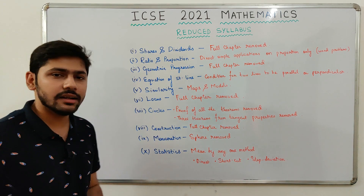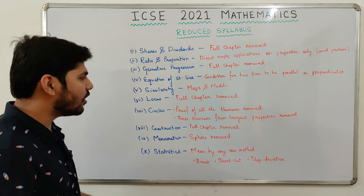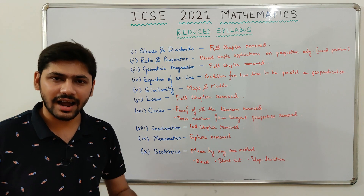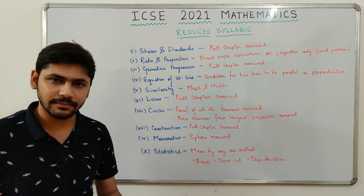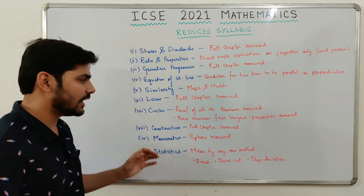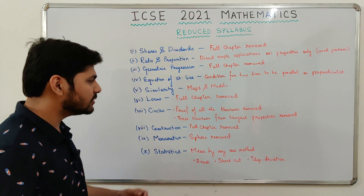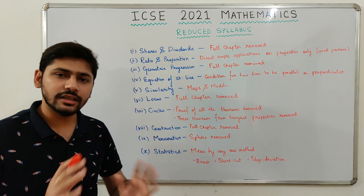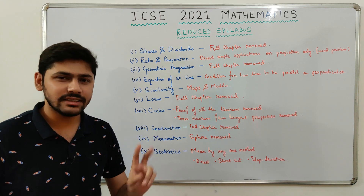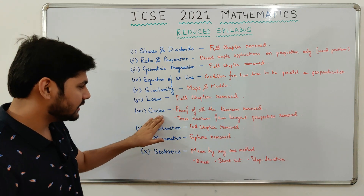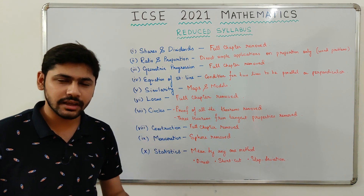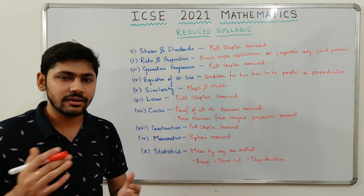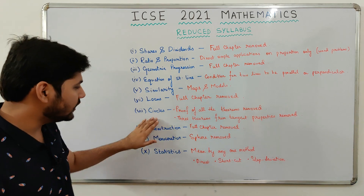Next, Circles. From circles, two things have been removed: first, proof of all theorems — though this is not a big removal since proofs were rarely asked in ICSC. Still, they are officially removed. Second, three theorems from tangent properties have been removed. However, it is better to study all the theorems in the chapter circles, because for a particular sum, one theorem may make it easy while another makes it difficult. Also, questions from circles appear in competitive exams, and class 10 is the last stage to study this chapter.